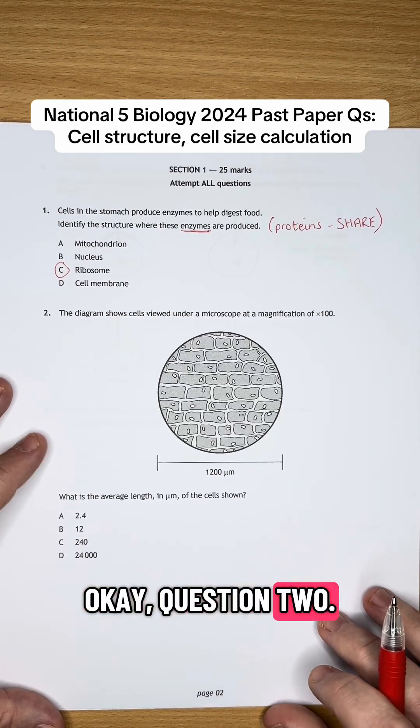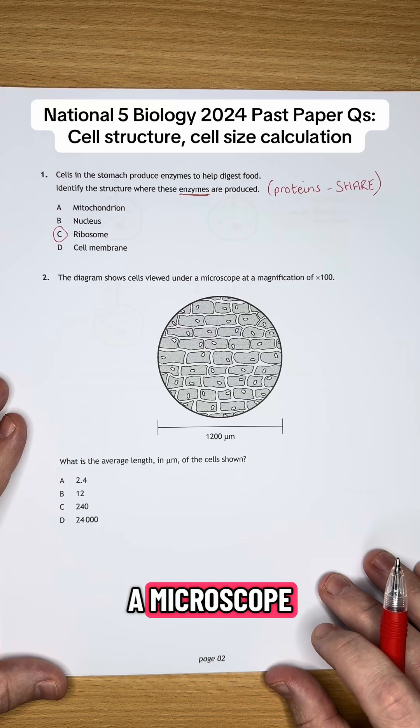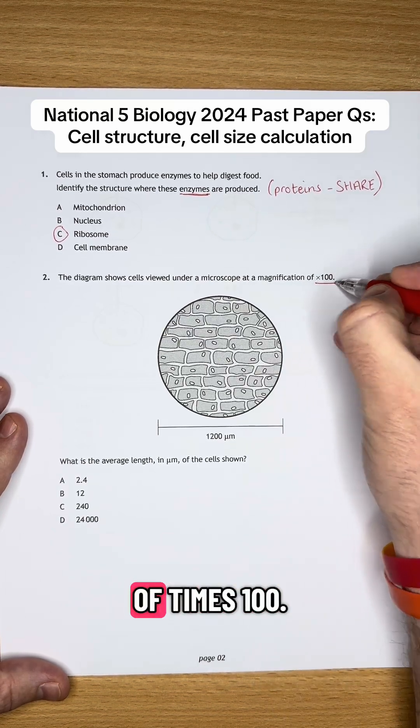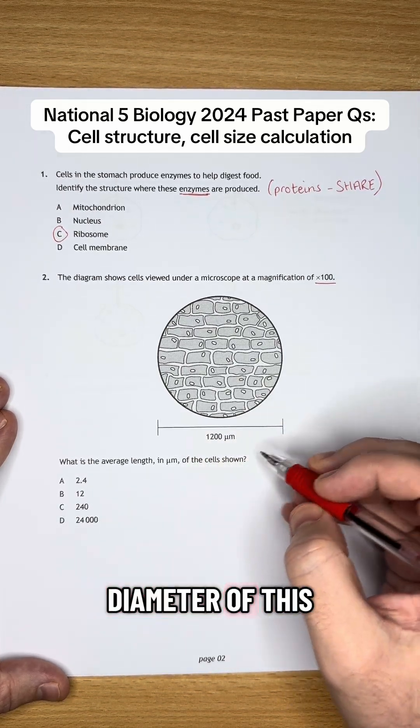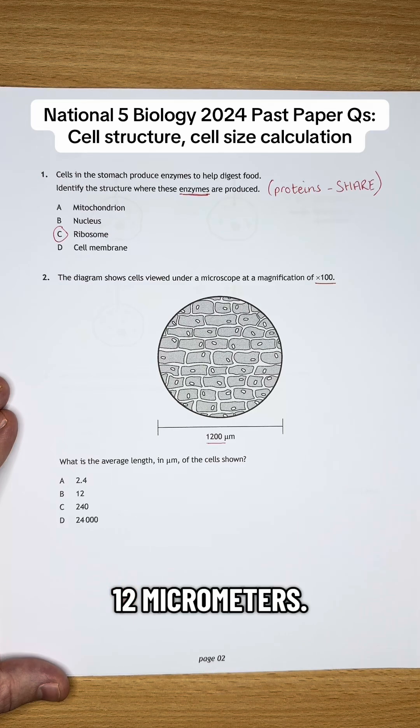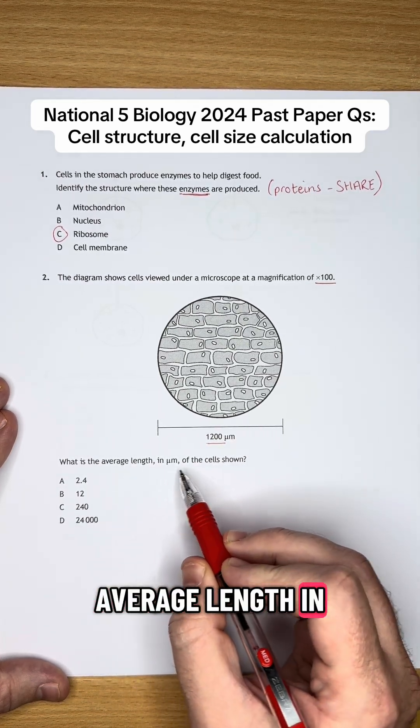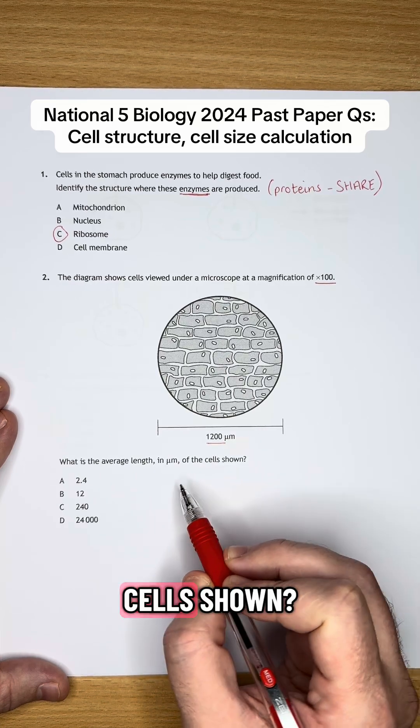Question two. The diagram shows cells viewed under a microscope at a magnification of times 100. The total diameter of this one here is 1200 micrometers. What is the average length in micrometers of the cells shown?